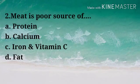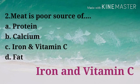Question: Meat is a poor source of — Options: A) Protein, B) Calcium, C) Iron and Vitamin C, D) Fat. Correct answer: Option C — Iron and Vitamin C. Meat is a poor source of iron and vitamin C.